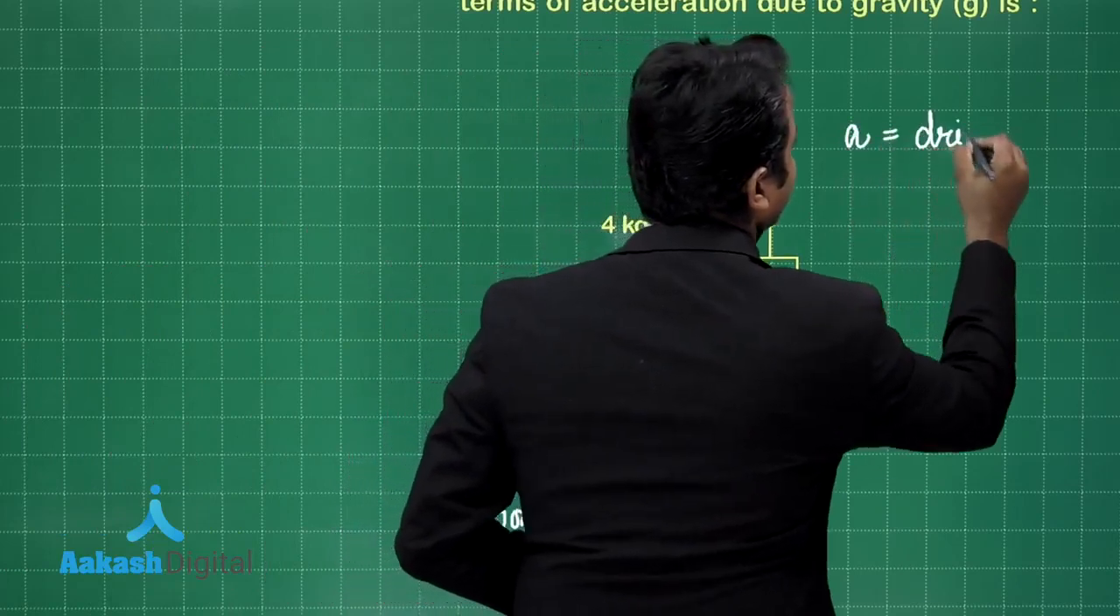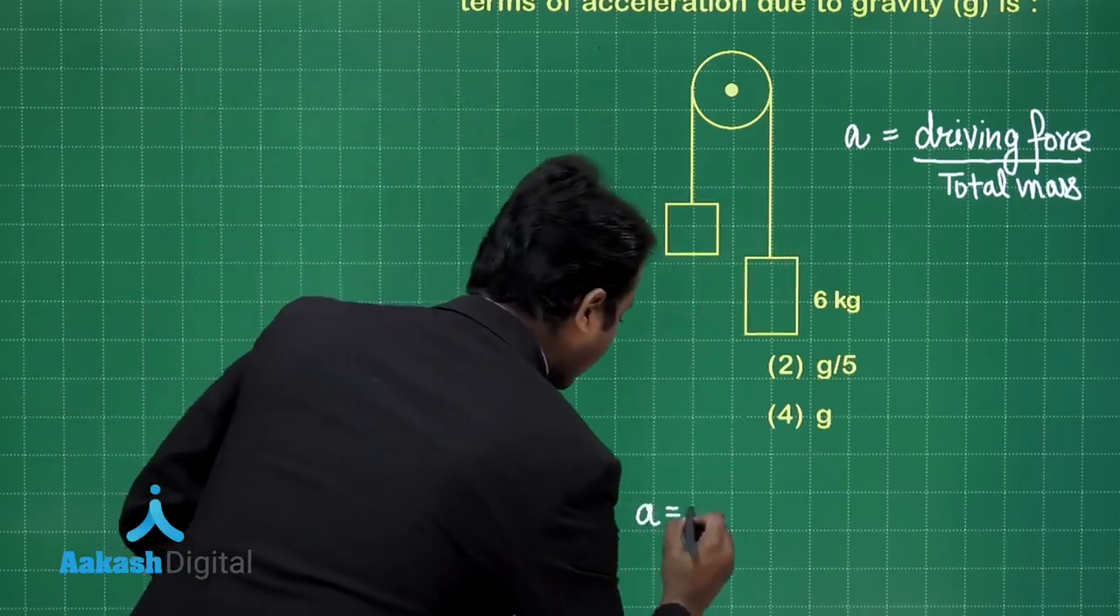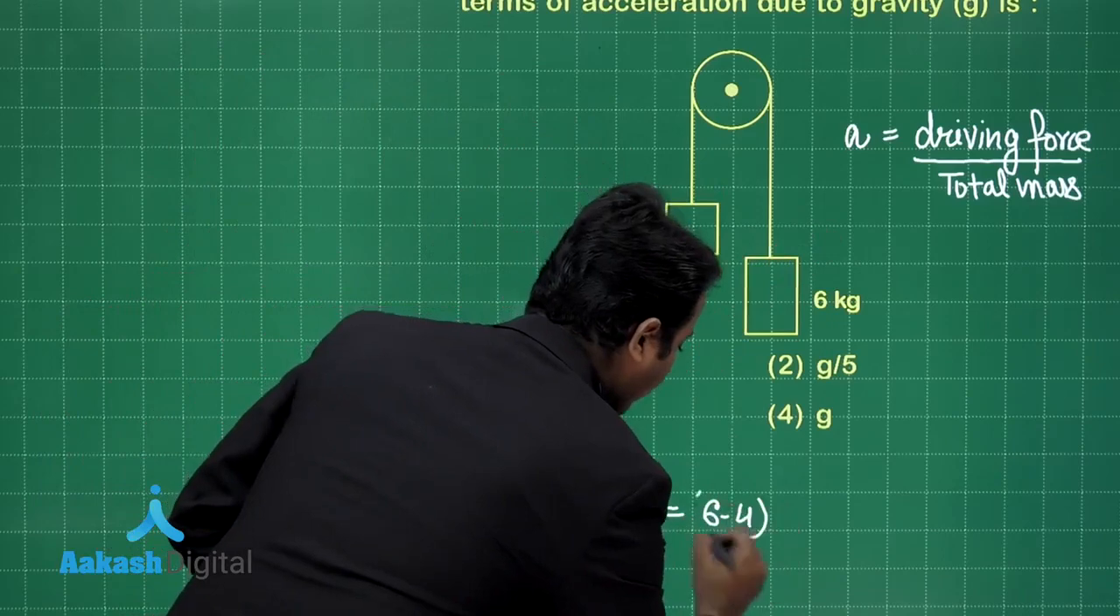In this question, the direct formula of acceleration you require is acceleration equals driving force by total mass. In this situation, the driving force will be 60 newton minus 40 newton, or in terms of g, the acceleration will be (6 - 4)g / (6 + 4). Here I'm using the formula.